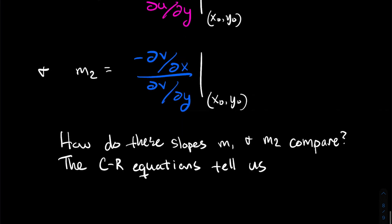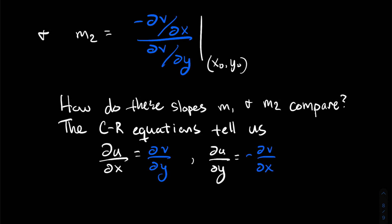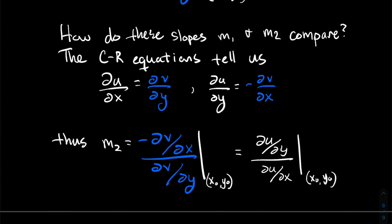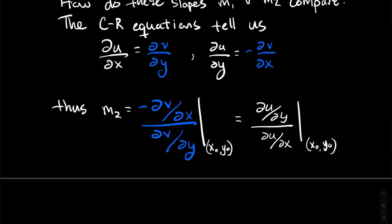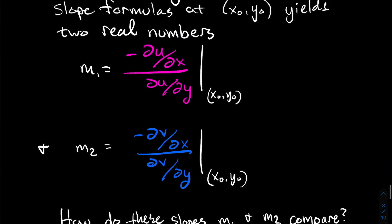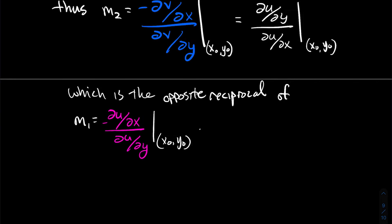Similarly m₂, the slope of V = k at (x₀, y₀), is minus (∂V/∂x) over (∂V/∂y) evaluated there. Now comparing m₁ and m₂ using the CR equations: ∂U/∂x = ∂V/∂y and ∂U/∂y = minus ∂V/∂x. Substituting into m₂: it becomes (∂U/∂y) over (∂U/∂x) evaluated at (x₀, y₀). Comparing m₂ to m₁: m₁ was minus (∂U/∂x) over (∂U/∂y). These two real numbers are opposite reciprocals of each other, and when two slopes are opposite reciprocals, the two tangent lines are perpendicular — meaning the two curves are orthogonal at that point.